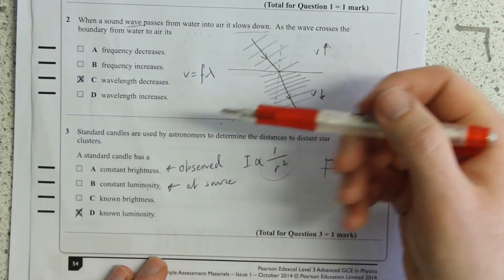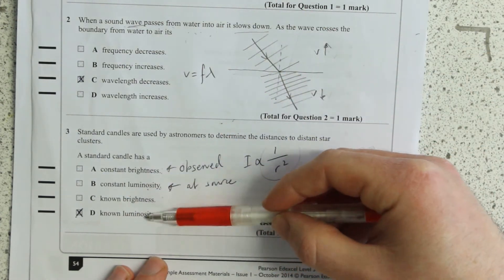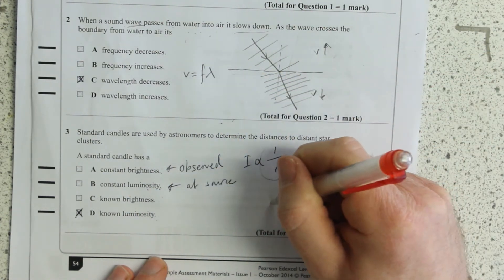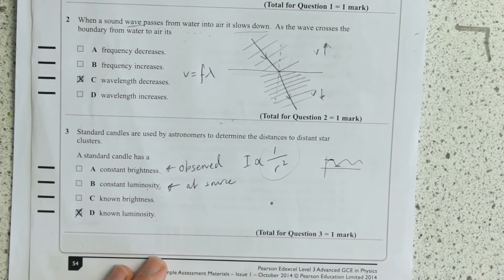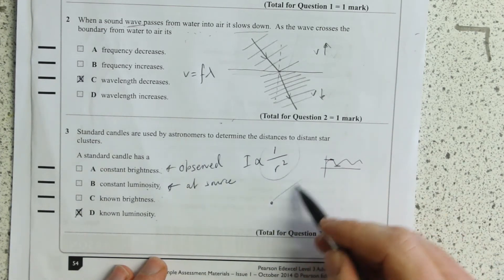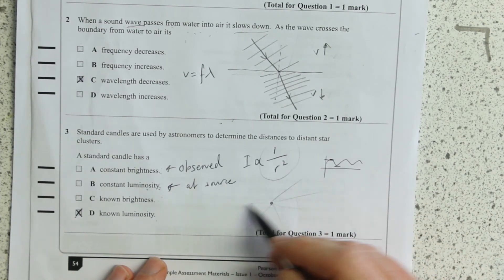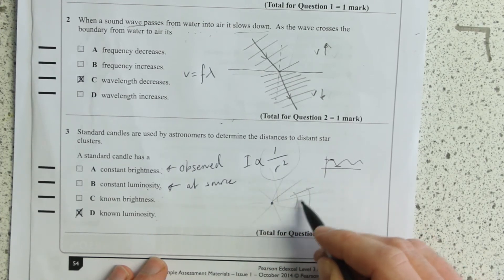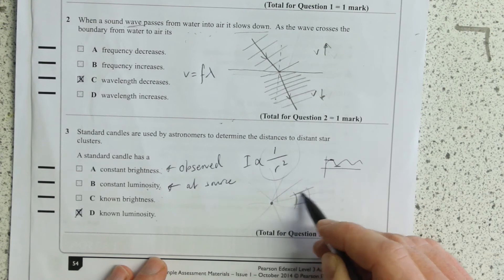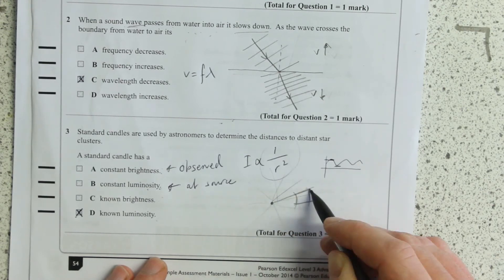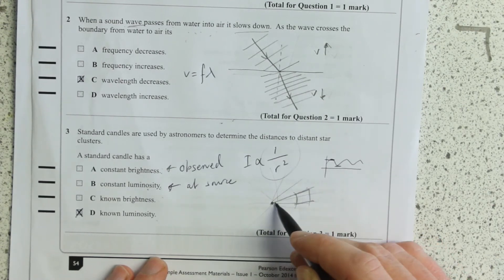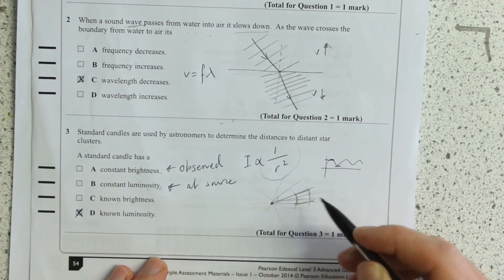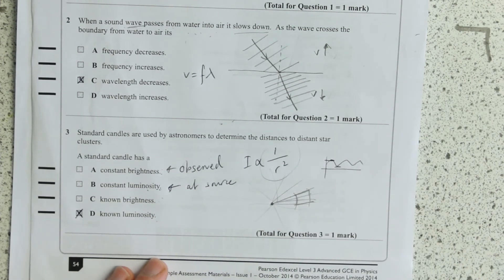So this answer should be D. A standard candle is where we know the luminosity of it at its source. We know all that flux is spreading out in every single direction in a big sphere, so we can use an area of that sphere which we observe and infer back because we know that is following an inverse square law.